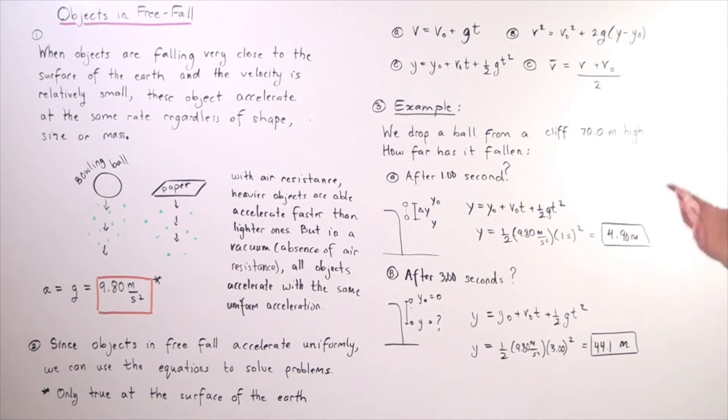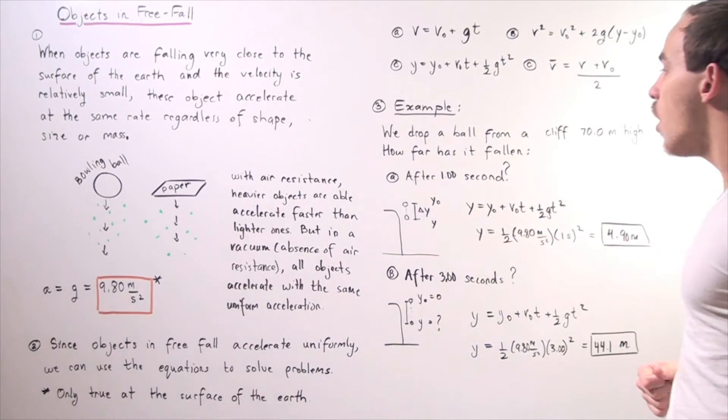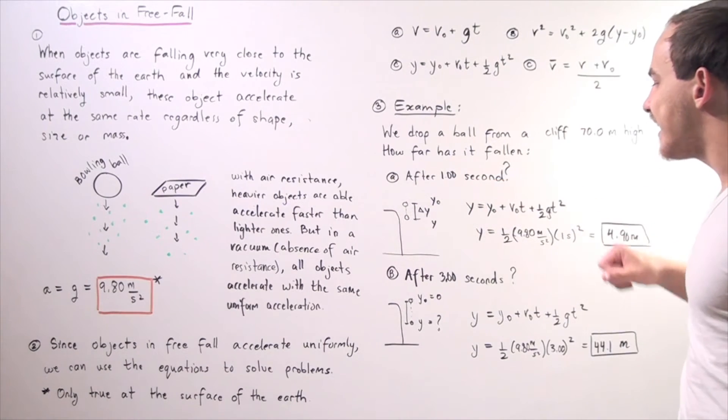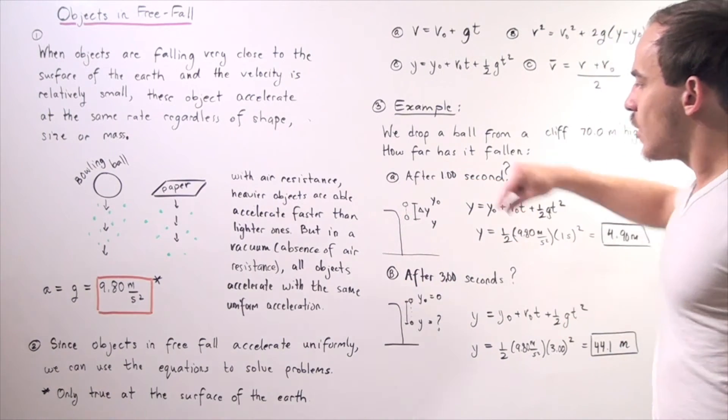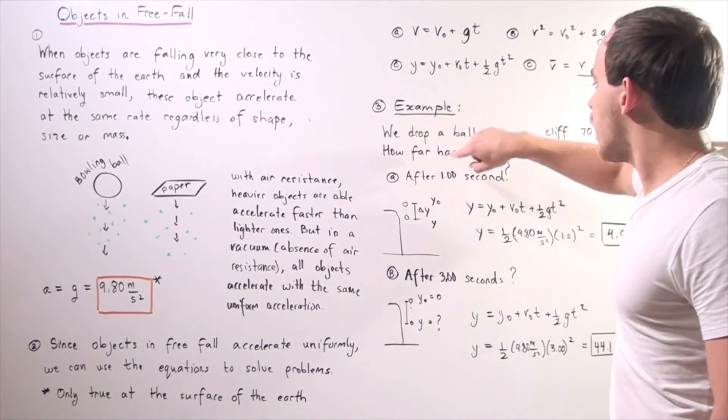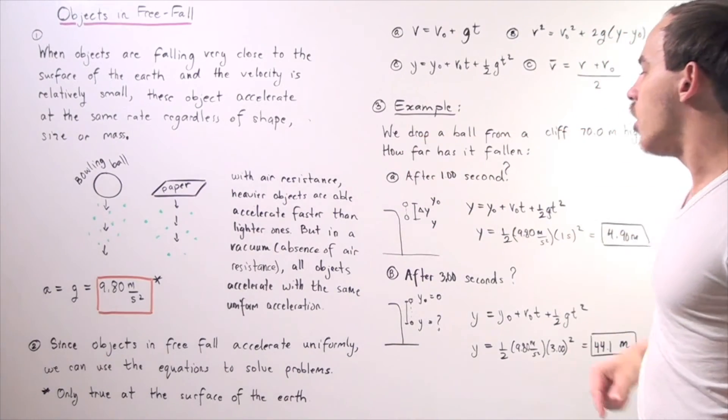Suppose we drop a ball from a cliff 70 meters high. How far will it fall or how far has it fallen after one second and after three seconds? Here's our cliff. We take our ball, we let go of the ball.